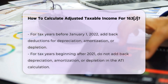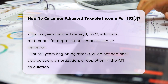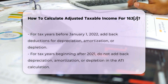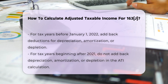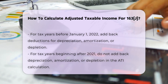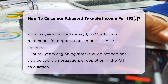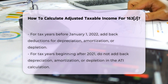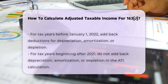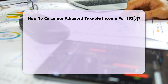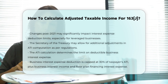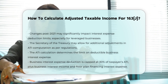Current Calculation Post-2021. For tax years beginning after 2021, the calculation of ATI no longer includes the add back of depreciation, amortization, or depletion. This change can significantly impact the interest expense deduction limit, particularly for highly leveraged businesses.